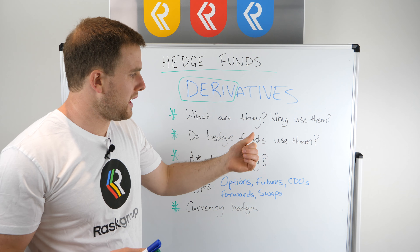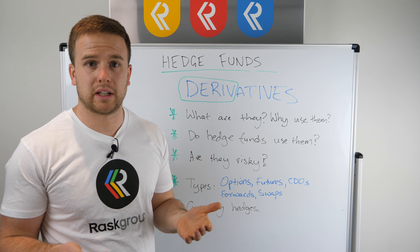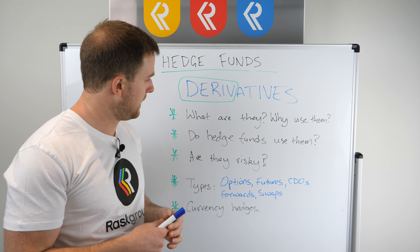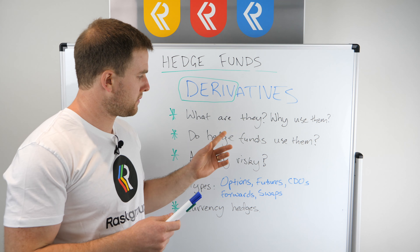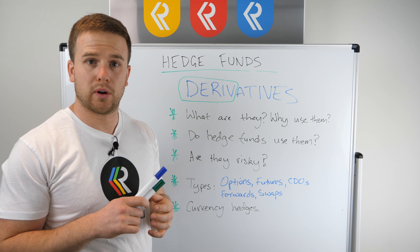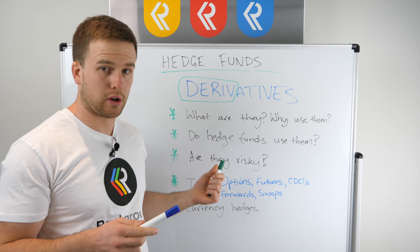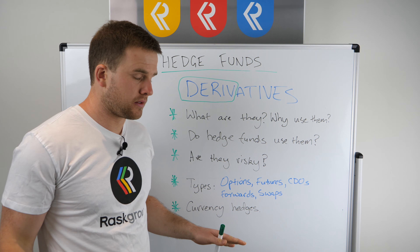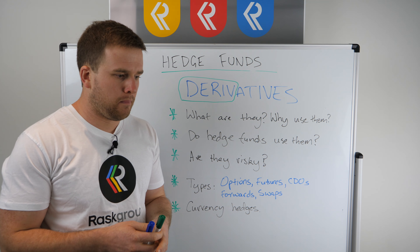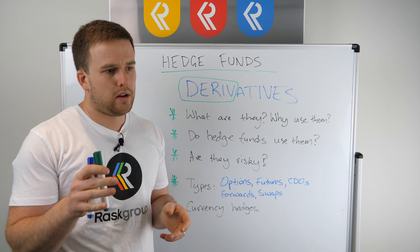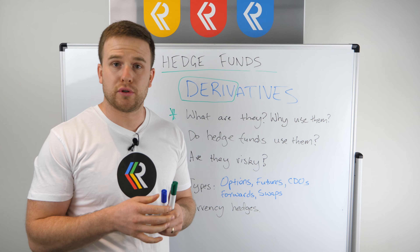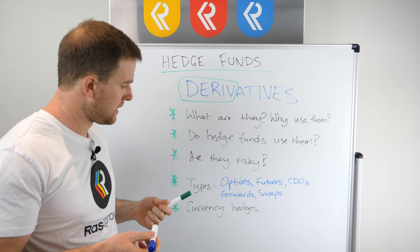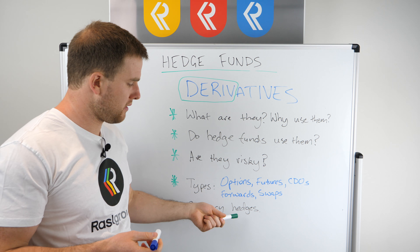We've already discussed why hedge funds use derivatives: one is to protect against risk and the other is to make profit. We've covered what hedge funds do in another video, so be sure to take a look at that if you want to know more. Finally, let's talk about currency hedges. One of the most common examples of investors, companies, or businesses using derivatives is through currency hedges.